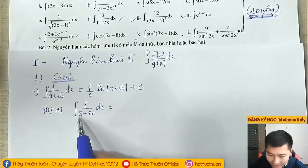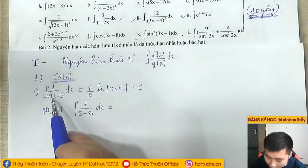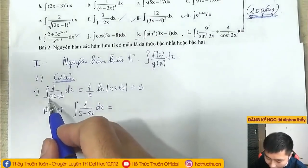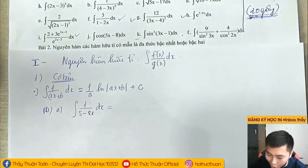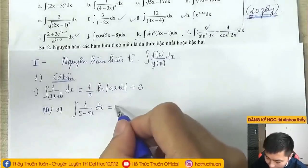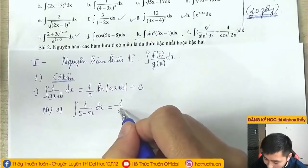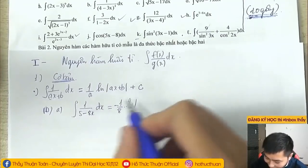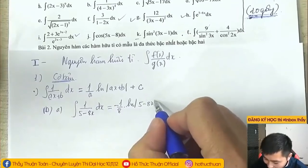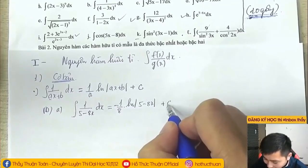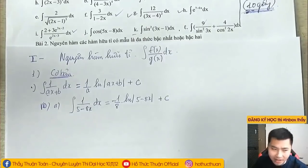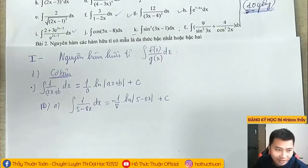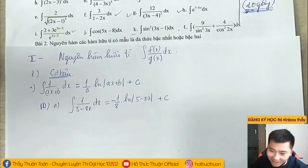Trong công thức cơ bản thứ nhất, A của chúng ta luôn luôn là hệ số đứng trước x. Trong bài này A bằng 8, vậy chúng ta ốp vào công thức: bằng (1/8) nhân ln|5+8x| cộng C. Không cần đặt bất cứ cái gì hết, chỉ cần nhớ công thức là đã đủ rồi. Tất cả các dạng cơ bản đều nhớ công thức là chúng ta có thể làm được luôn.